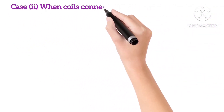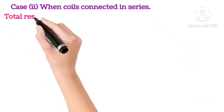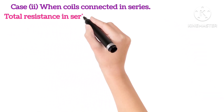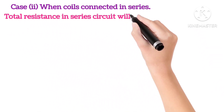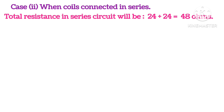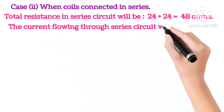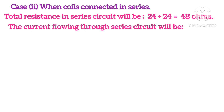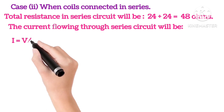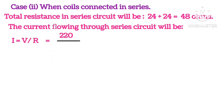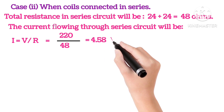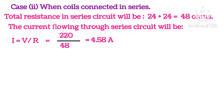Case 2: when the coils are connected in series, total resistance in series circuit will be 24 plus 24, that is 48 ohms. The current flowing through series circuit will be I equals V upon R. Putting in the values, we get current 4.58 ampere.